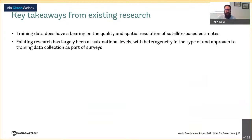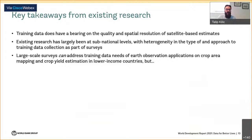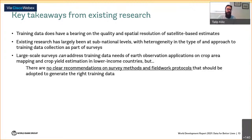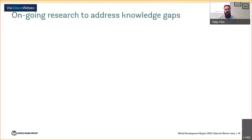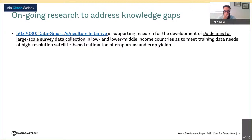The second observation from the literature review is that much research has been conducted at sub-national levels with significant variation in approach to training data collection across surveys. There is a widespread desire for recurrent large-scale surveys to address shortcomings in training data for earth observation applications. However, an important constraint is that there are no clear recommendations currently on survey methods and fieldwork protocols that can generate the right training data, and these requirements are also expected to vary based on the outcome — crop areas versus crop yields.